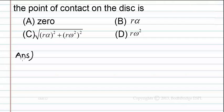If the wheel moves less than or greater than 2 pi r in one full rotation, slipping occurs at the point of contact, and in this case, frictional force plays an important role.